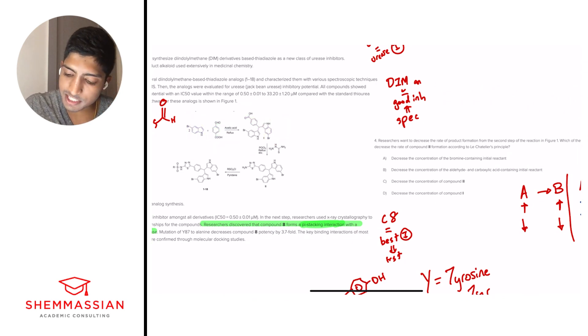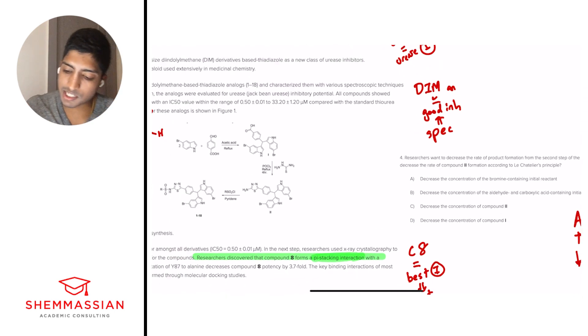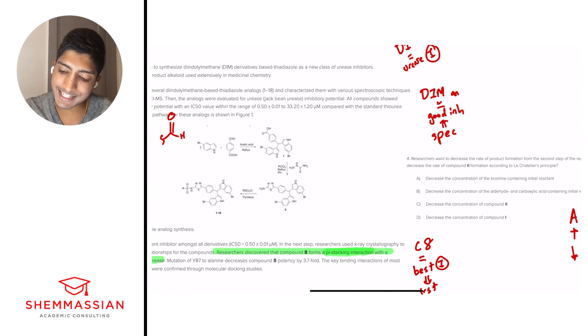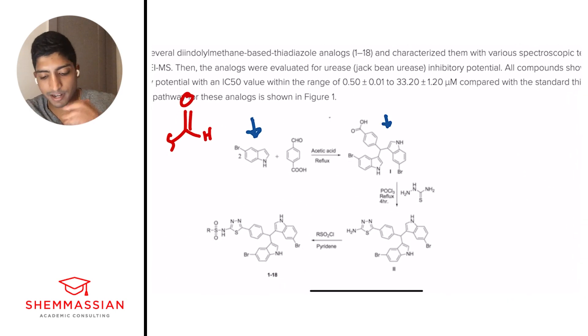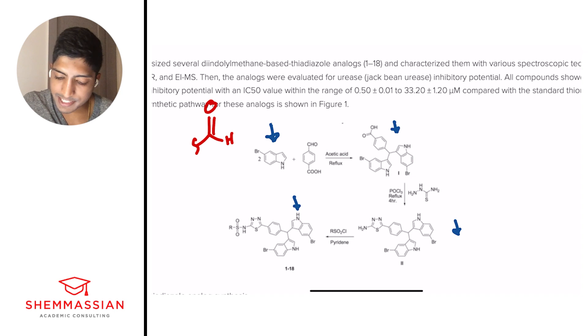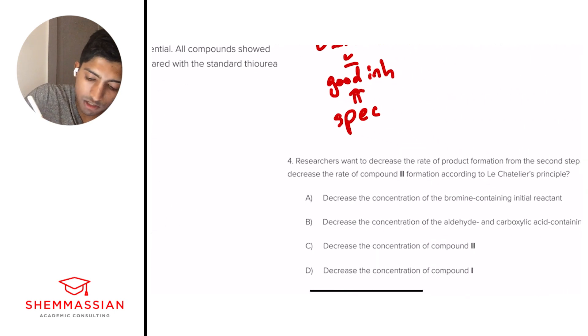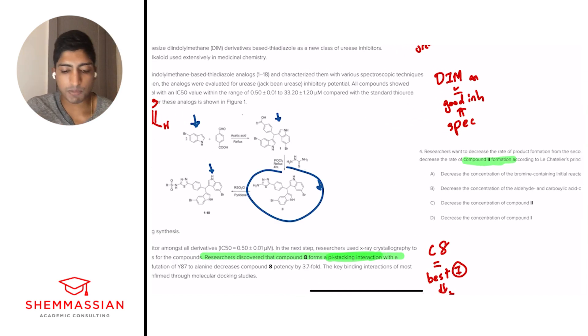So let's take the first thing. We decrease the concentration of the bromine-containing initial reactant. So if we decrease this, what's going to happen down the line? Well, if we decrease that initial amount, we're going to decrease the amount that's being made there, and we're decreasing the amount that's being made there, and further on. And so the question is asking specifically about compound 2 formation. And that means we're looking at this spot. So what is happening at this spot? Well, by our trend of arrows, we see that that amount is decreasing. So right away, we can eliminate A.